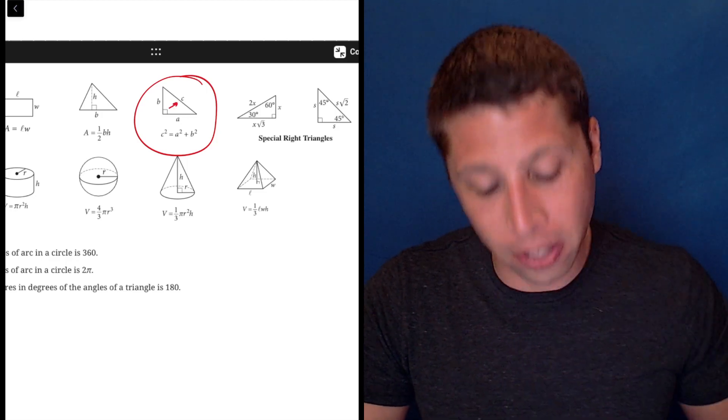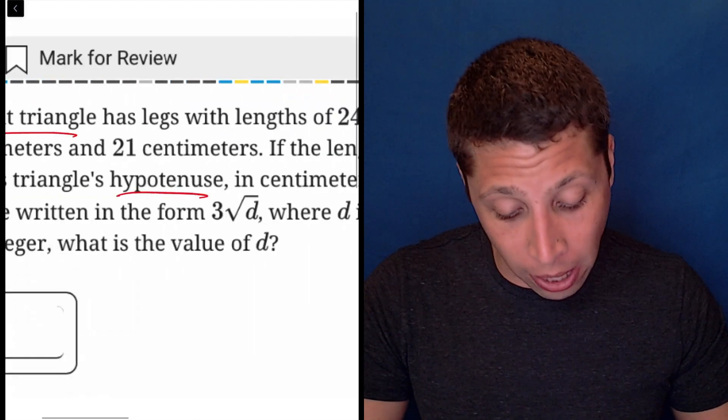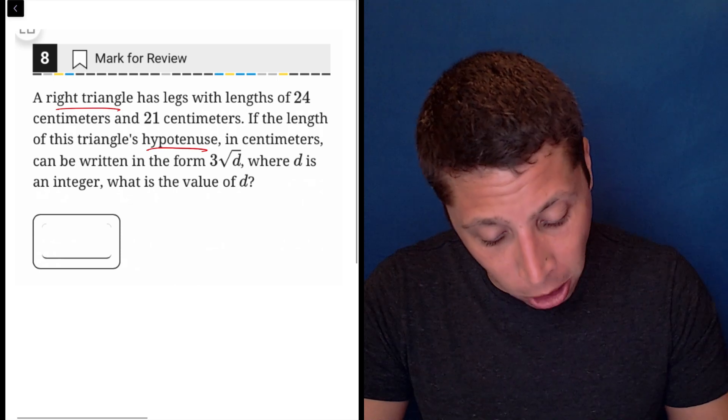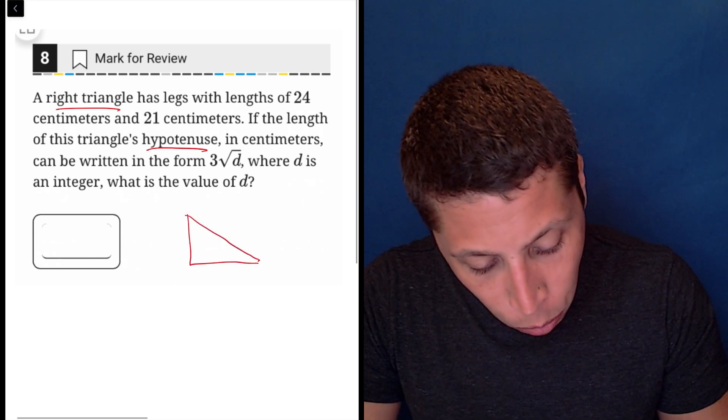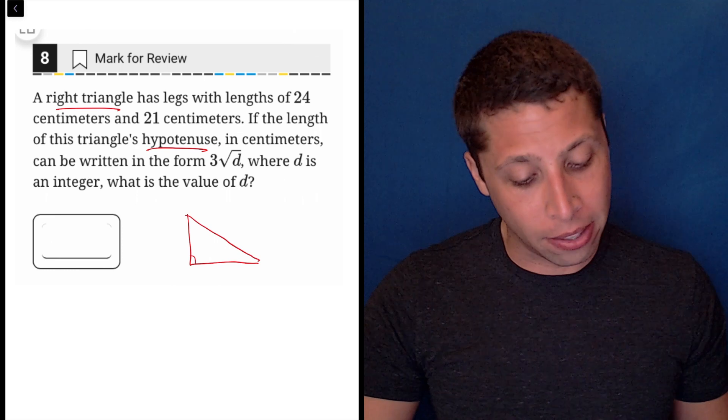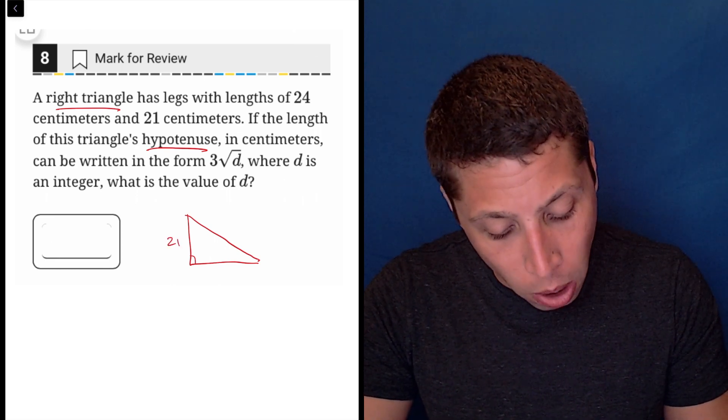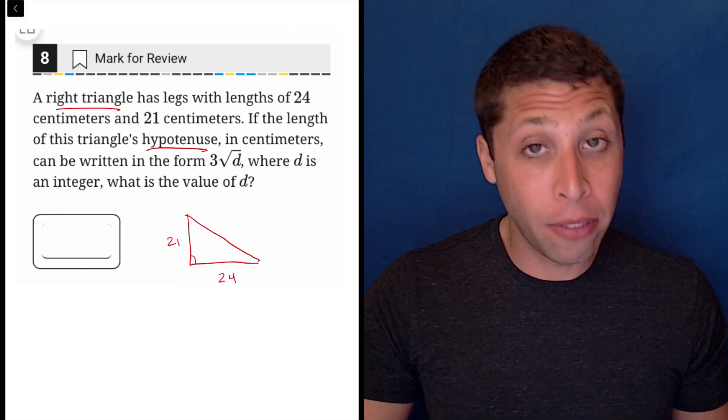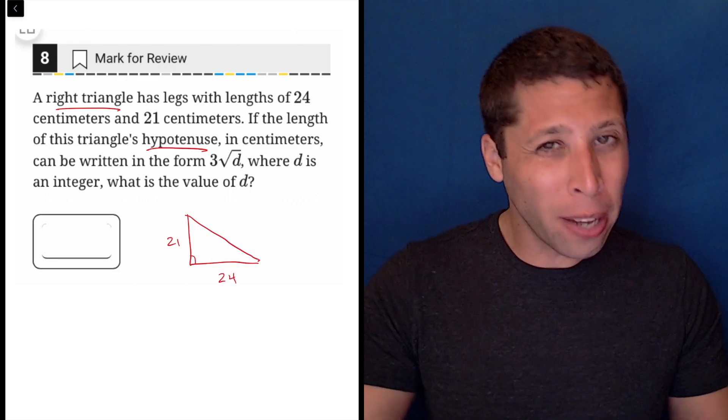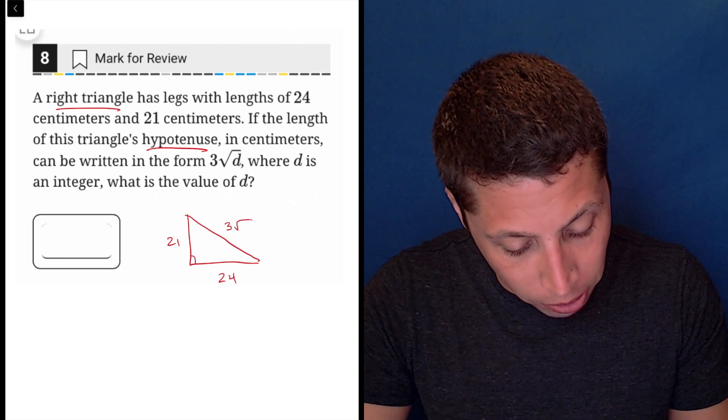That's the side that is opposite the right angle. So if you're having trouble understanding this, just start by drawing a similar right triangle to the one that they give you and put things in the right place. So 24 and 21 are the two legs of this triangle, and then the hypotenuse is weird, but we can just put it there, 3 square root d.